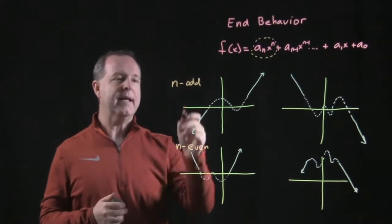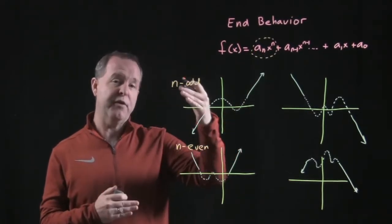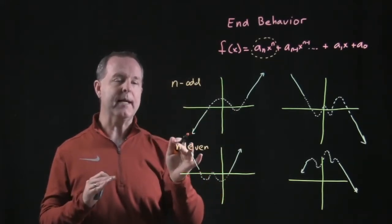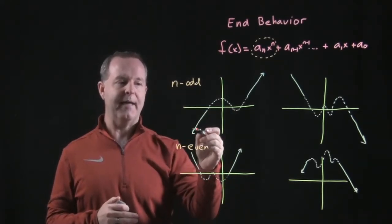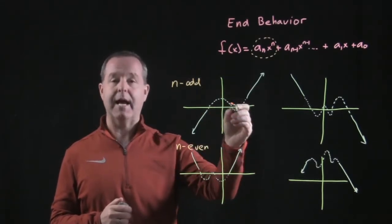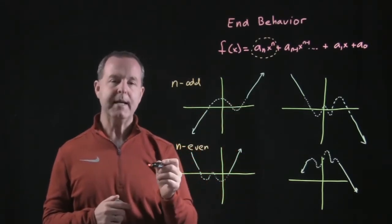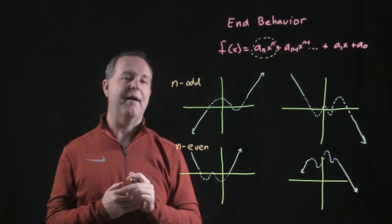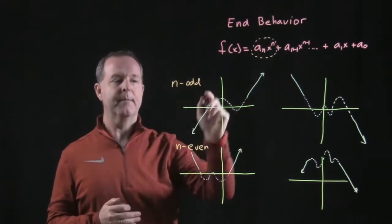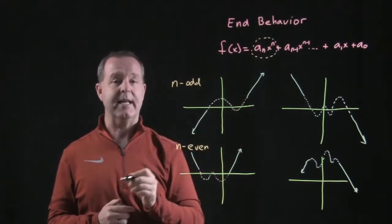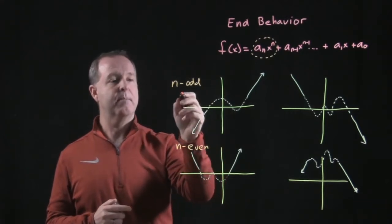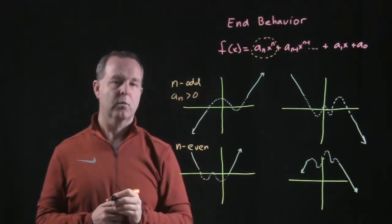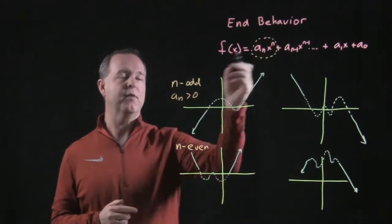For example, if n is odd, which means I might have x to the third, x to the seventh, x to the ninth, whatever it might be, I'm going to get a graph that has this particular type of flow. Which means that on my left side, the graph begins very low, and then on the right side, the graph takes away very high. This is true when I have any index n that's odd and my a sub n is greater than zero, which means I have a positive value in that first one.